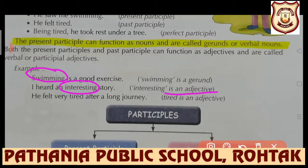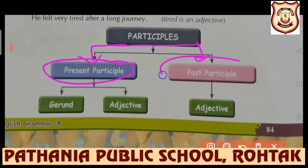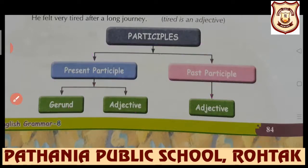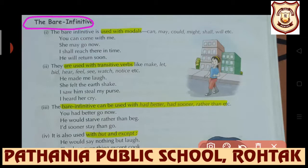'He felt very tired after a long journey' - 'tired' has been used as an adjective here. Participles are of two main parts: present participle and past participle. Present participle works in two ways - as gerund or adjective. Past participle works as adjective only. Now let's learn how the bare infinitive can be used in sentences. Bare infinitive means only the first form of the verb.